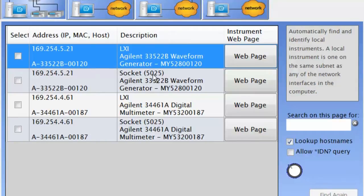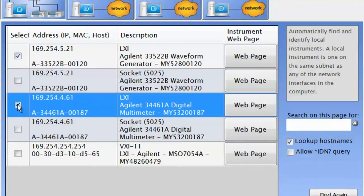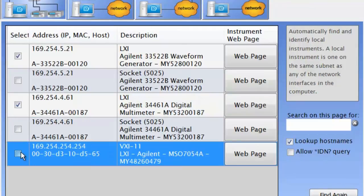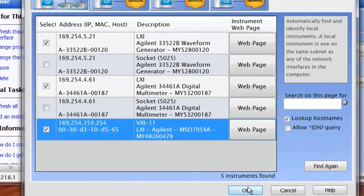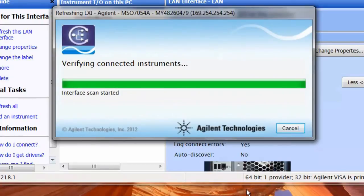Once we've found each of the instruments, we can go ahead and select them. So I'm selecting the waveform generator, the DMM, and the oscilloscope. So I'll go ahead and say okay. And so it's going to go out and do an IDN of each of the instruments. And then it's going to go ahead and set them up in the Agilent Connection Expert.